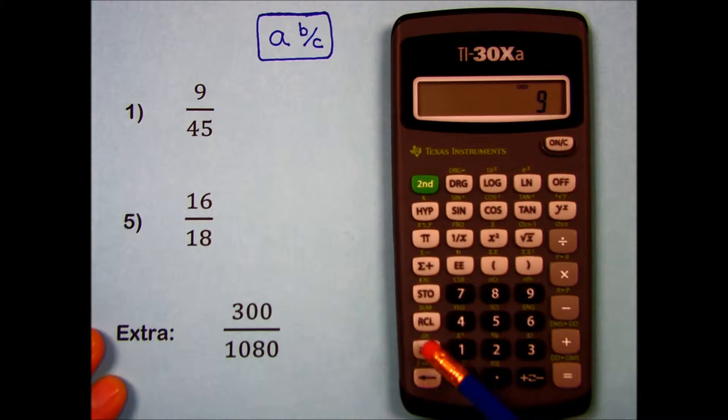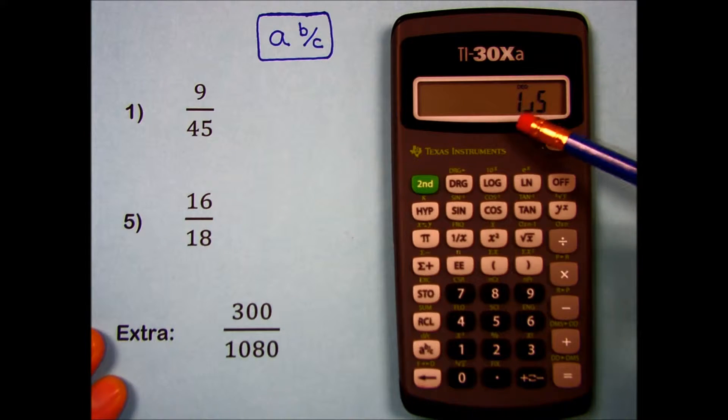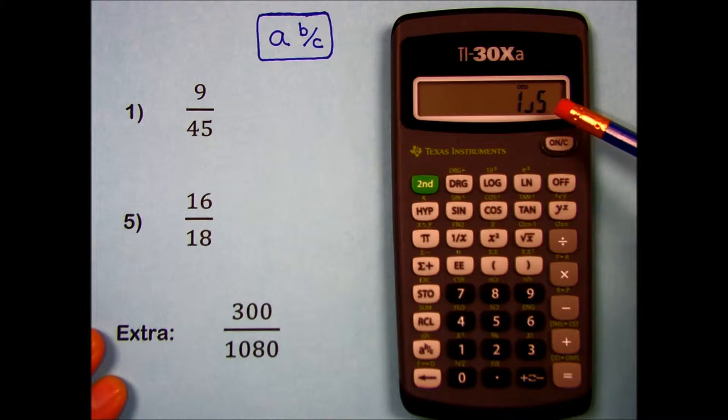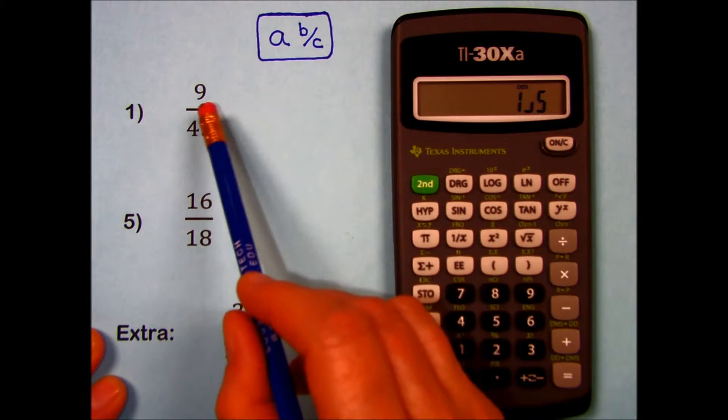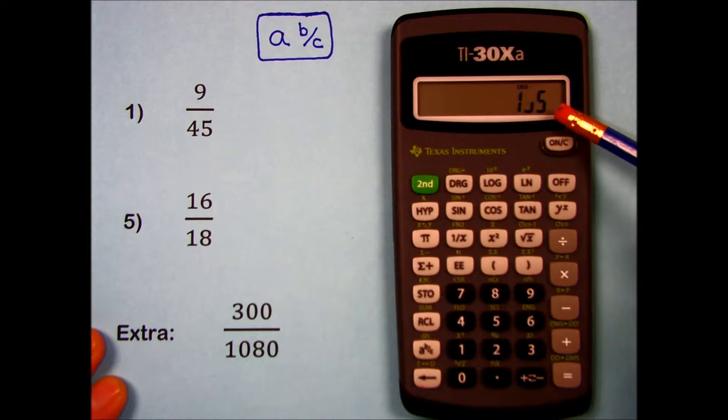9, fraction key, 45, press ENTER or equals, and it reduces for us to lowest terms. 1/5 is the same value as 9/45, but the numbers are as simple as possible.